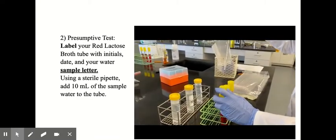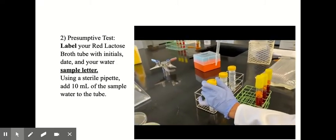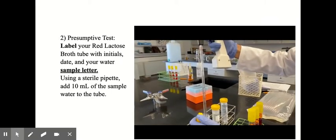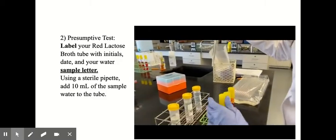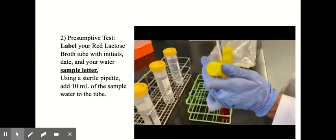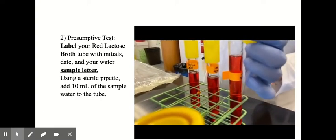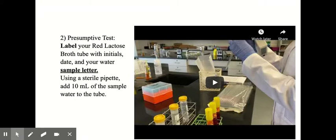So just loosen the cap on everything before you start. And taking 10 ml of the sample water from sample A, and adding it to the broth that's labeled sample A. And then you would repeat that for all of the sample letters.